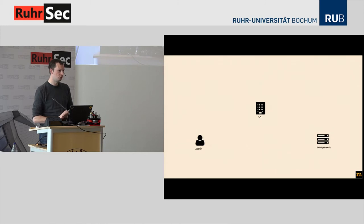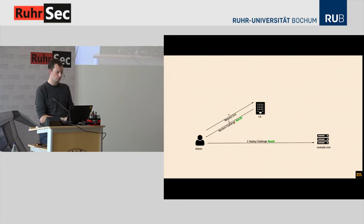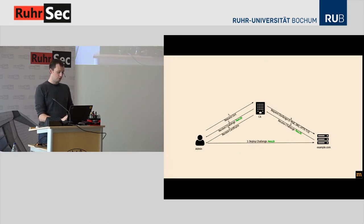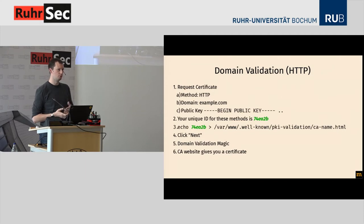The domain validation scheme is kind of like a challenge-response protocol. The admin tells the CA, 'I want a certificate for example.com.' The CA says, 'Put this number on the web page.' The admin puts the number on the web page, the CA checks, finds the number, and gives the certificate. There are various ways to put something on the server. One is via HTTP, where there is a specific folder called .well-known/pki-validation where you put the number — the reason being that you usually wouldn't put something in a folder that is hidden in Unix, which a preceding dot indicates.